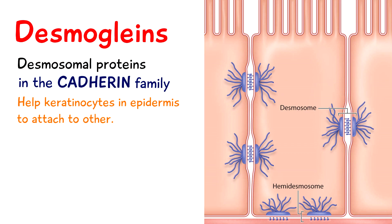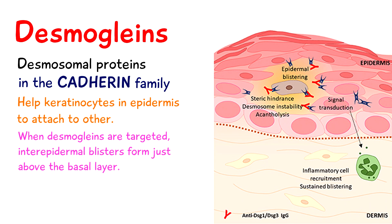When these proteins are targeted, intraepidermal blisters form just above the basal layer. To simplify that: Desmogleins help keratinocytes stick together, and when they are targeted by these autoantibodies, the keratinocytes can't stick together, so we have blister formation instead of tight skin.